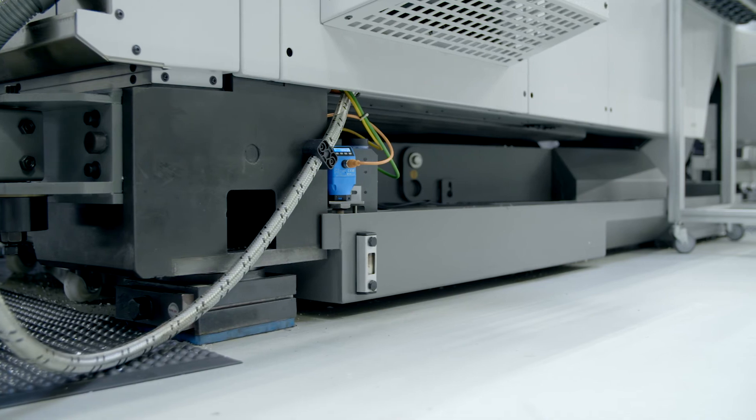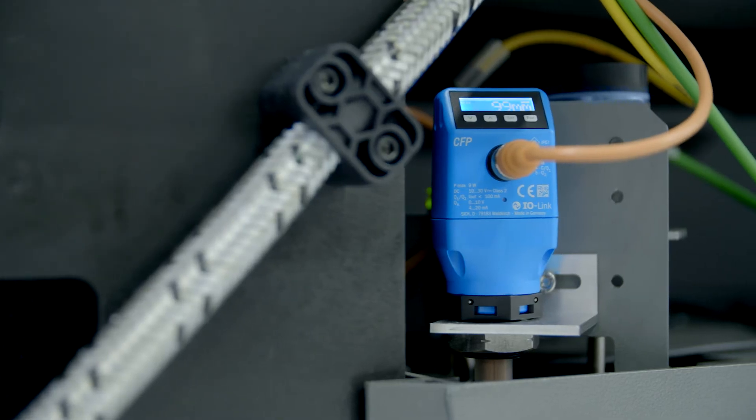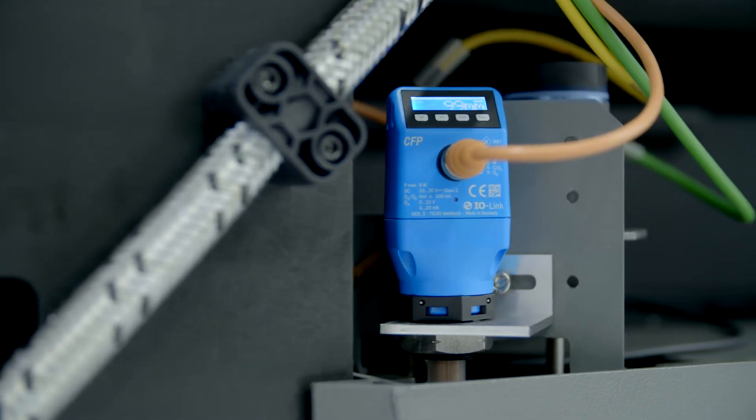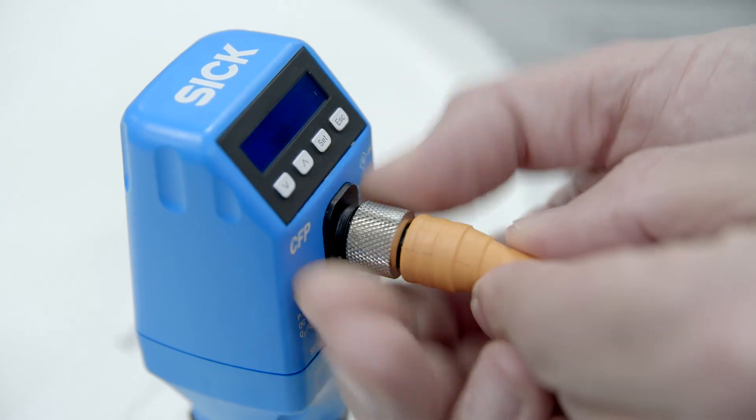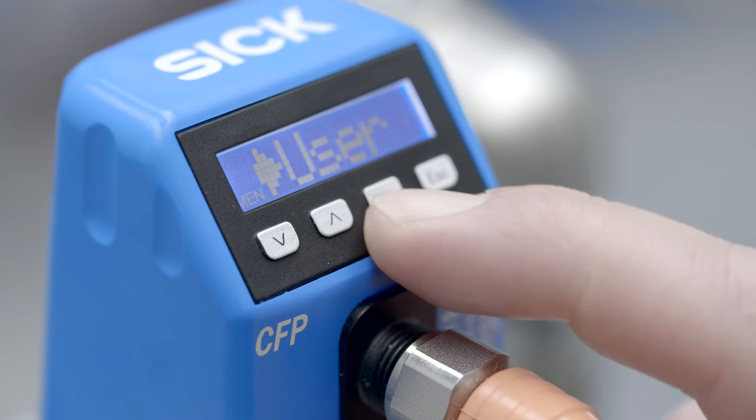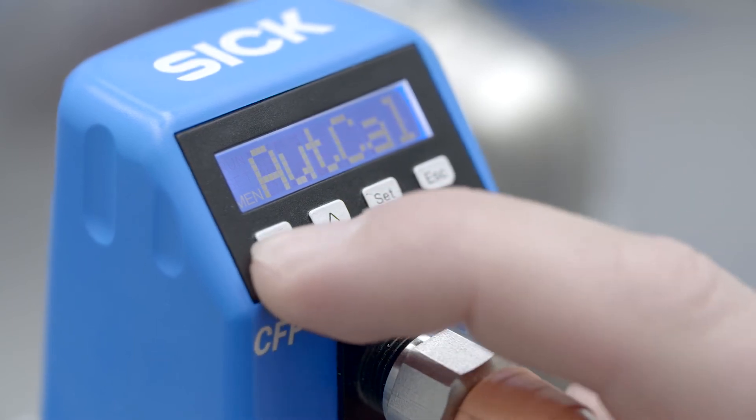Due to the compact design of the housing, the sensor can even be installed in locations where space is at a premium. Intuitive setup via a guided menu enables the sensor to be adapted to the measuring task quickly and easily.